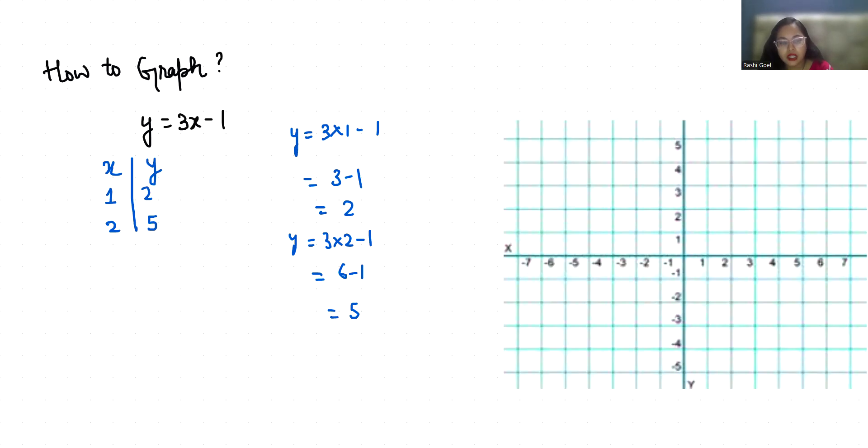Now if our x is 0, y equals 3 times 0 minus 1, that is 0 minus 1, minus 1. So y is minus 1.